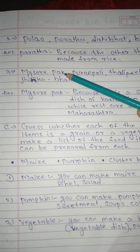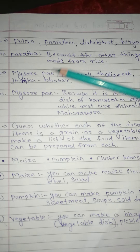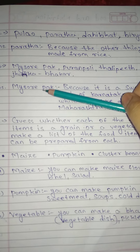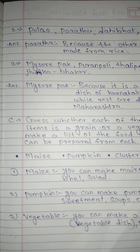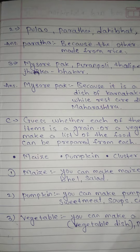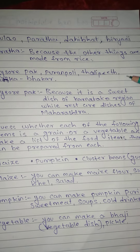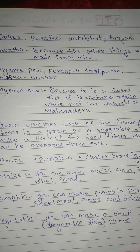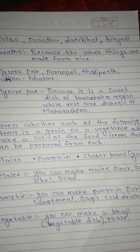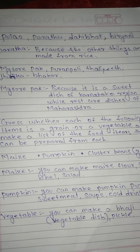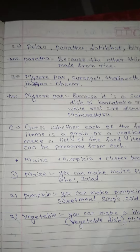No. 3: Mysore Pak, Puran Poli, Thalipeeth, Dhapate, Jhunka Bhakar. Answer: Mysore Pak — because it is a sweet dish of the Karnataka region, while the rest are dishes of Maharashtra.